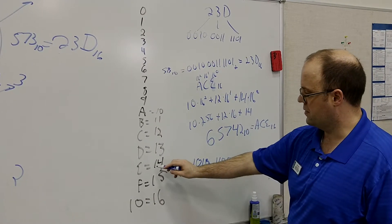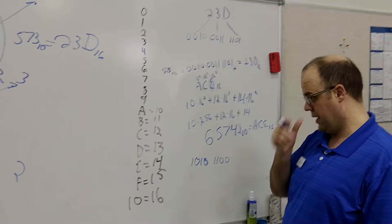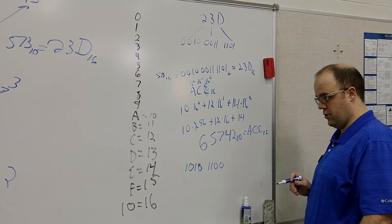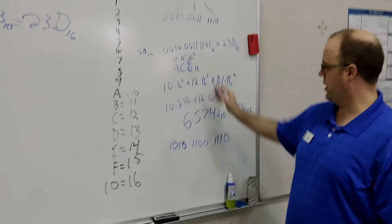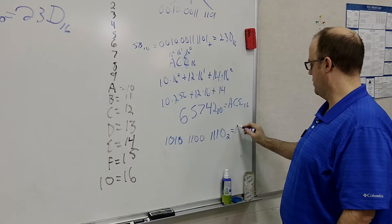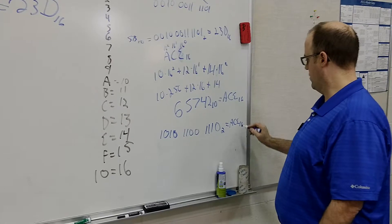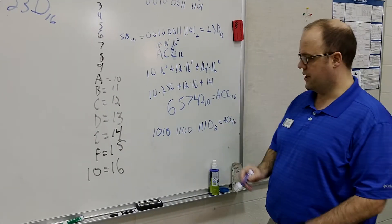And E is 14, and that would be 8, 2, and 4, so it would be 1, 1, 1, 0. So if you do this, this is the binary. This is the binary equivalent to that.